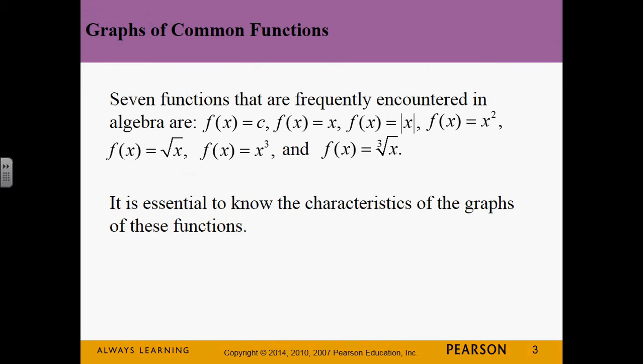The seven functions we frequently encounter in pre-cal are: a constant like f(x) = 2, f(x) = x (a straight linear line), absolute value of x, x squared, square root of x, cube of x, and the cube root of x. We want to know what all of these graphs look like.